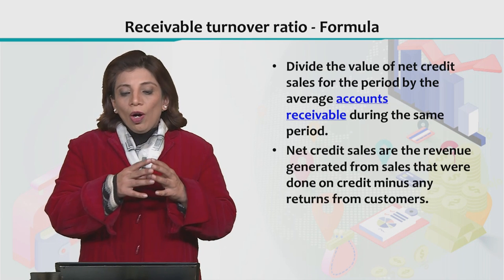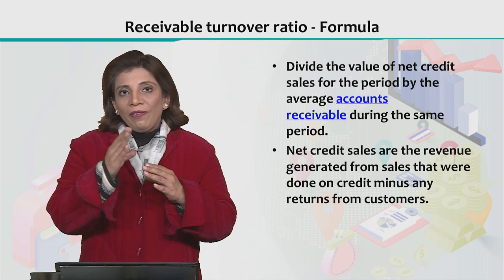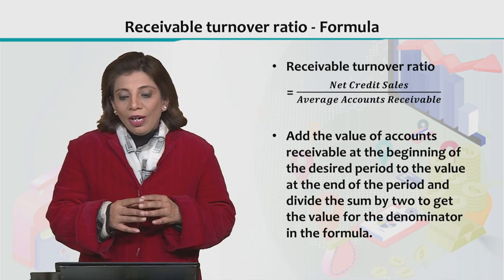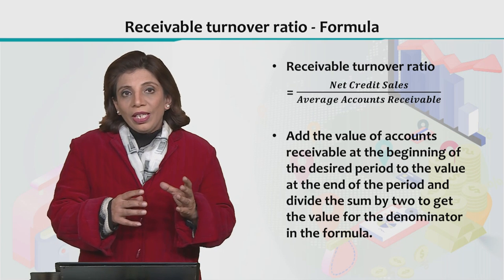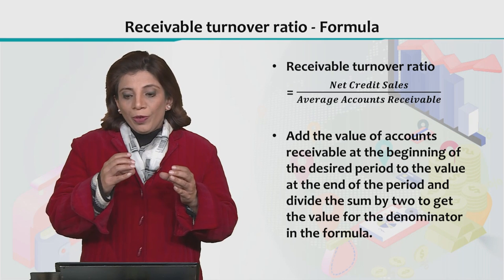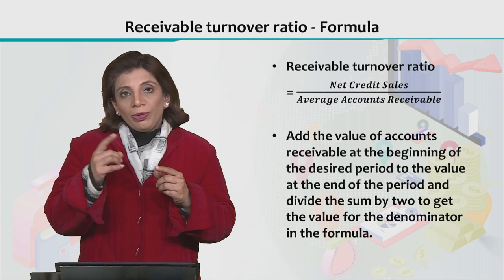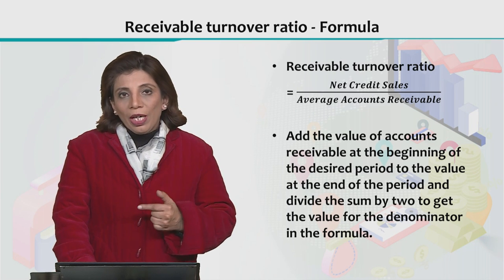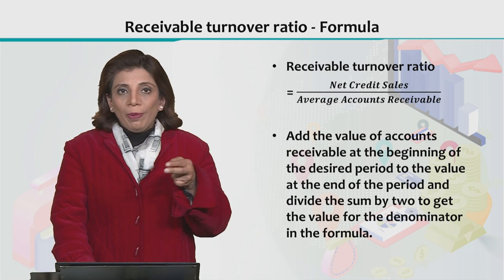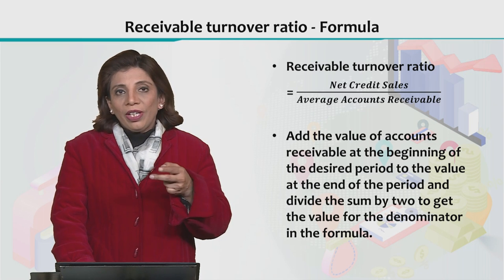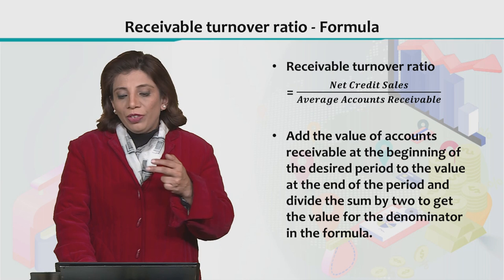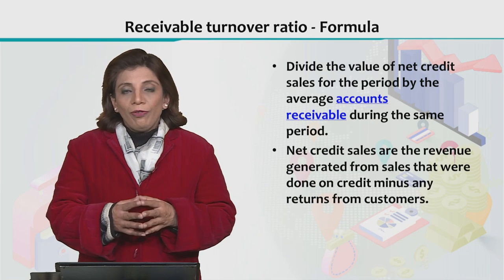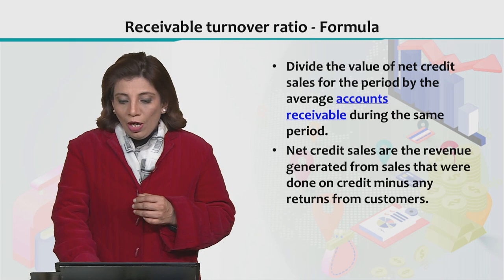The larger the value, the more efficiency it shows. It means that your denominator value, the average accounts receivable, is smaller compared to net credit sales — so you get a larger ratio value. This means your sales are roughly equal to or greater than your average accounts receivable, giving you a large receivable turnover ratio.